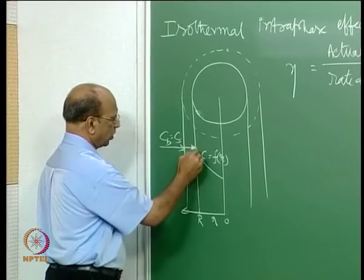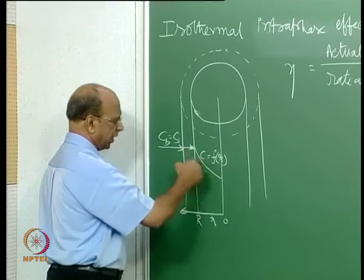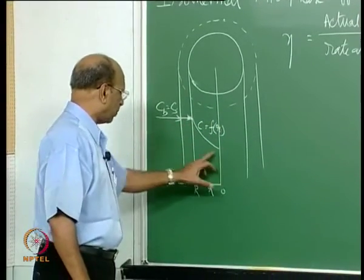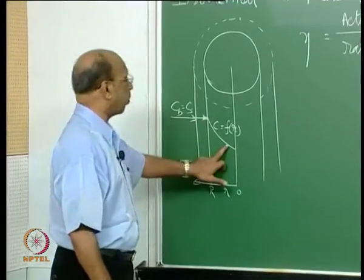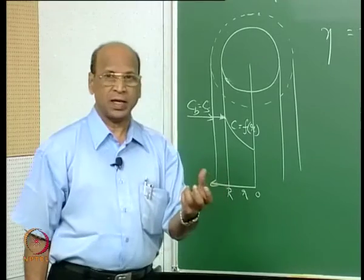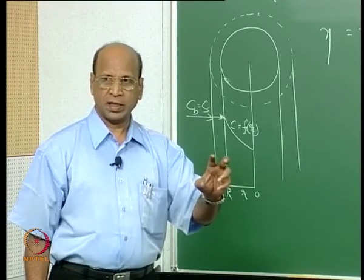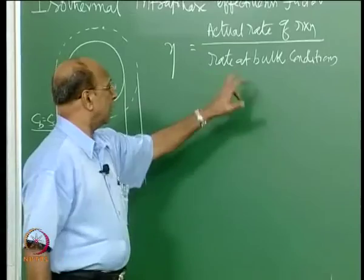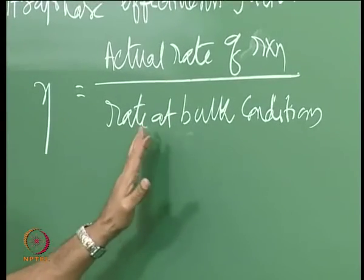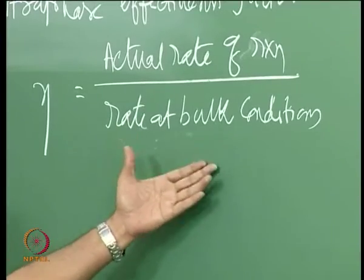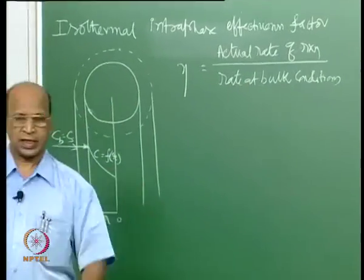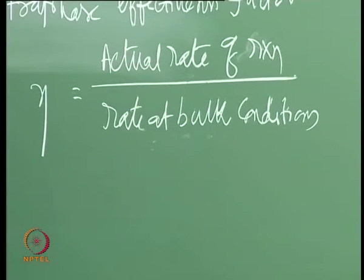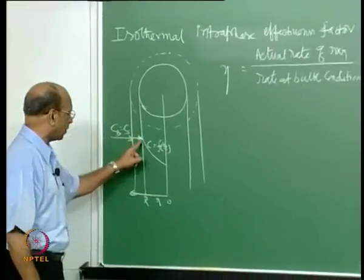The concentration inside the particle is less than C_b — isothermal, temperature is constant throughout, but C inside is decreasing. The procedure is: we first develop the concentration profile, then use this profile to find out how much A has entered the particle. To find the actual rate, we must first develop the concentration profile.